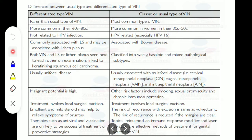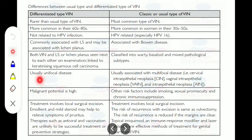Differentiated VIN is rare; the classical type is most common. Differentiated type occurs in the 60s–80s, is not HPV-related, is associated with lichen sclerosis, linked to keratinizing squamous cell carcinoma, typically unifocal, and has high malignancy potential. Classical type occurs in the 30s–50s, is HPV-related, associated with Bowen's disease, linked to warty/mixed subtypes, and is multifocal. Treatment for differentiated VIN is surgical excision; classical VIN may also use topical imiquimod and laser ablation.